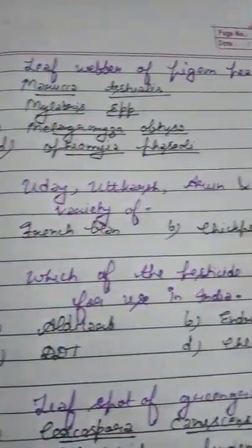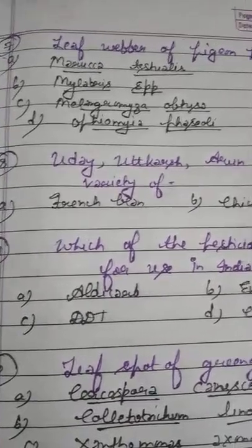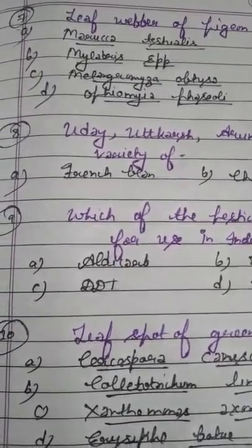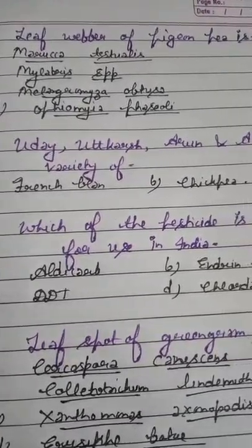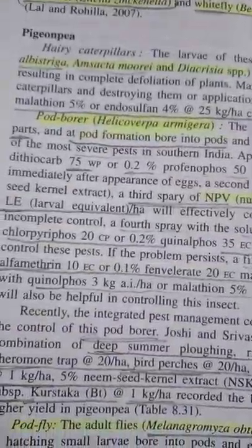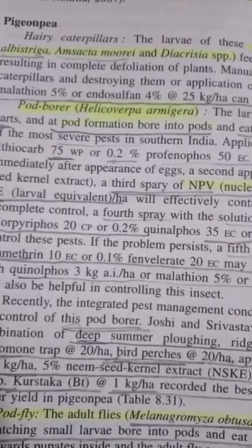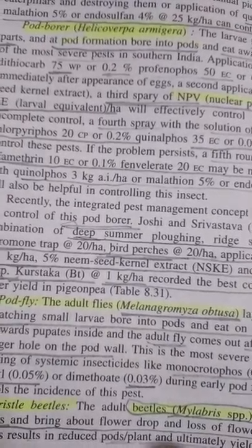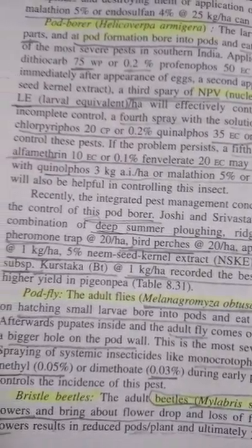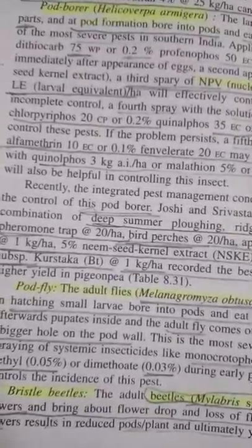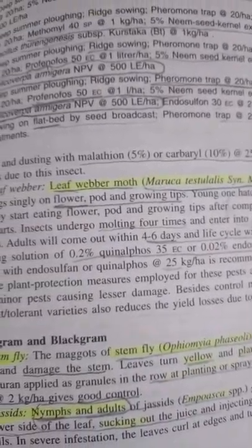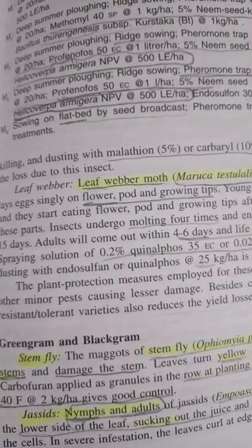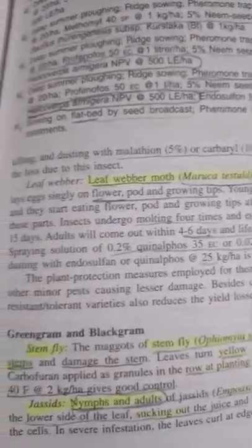Question number 7: the leaf webber of pigeonpea is? Option A: Maruca testulalis. Option B: Mylabris species. Option C: Melanagromyza obtusa. Option D: Ophiomyia phaseoli. Important pests of pigeonpea: hairy caterpillar — Amarastha moorei; pod borer — Helicoverpa armigera; pod fly — Melanagromyza obtusa; blister beetle — Mylabris species; and stem fly — Ophiomyia phaseoli. The correct answer is option A — leaf webber moth of pigeonpea is Maruca testulalis. Please remember it.